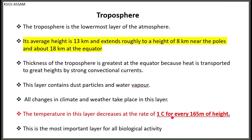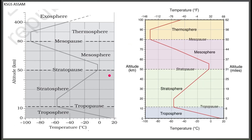The temperature decreases at a rate of 1 degree Celsius for every 165 metres of height in the troposphere. Every 165 metres of height results in a 1 degree Celsius decrease. The overall decrease is around 3 degrees Celsius.